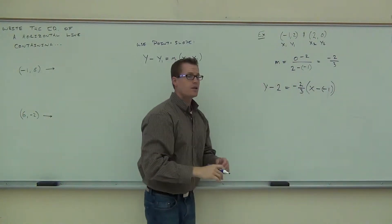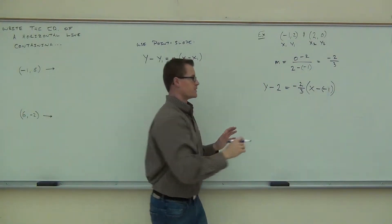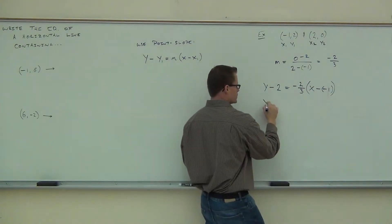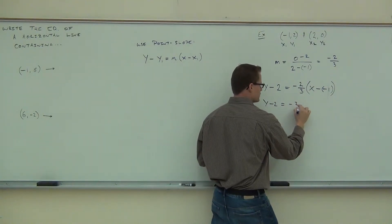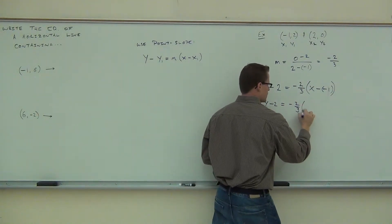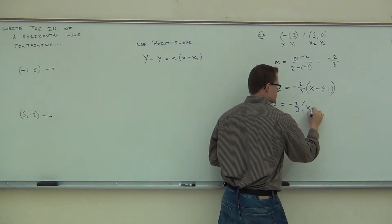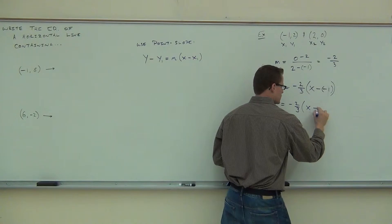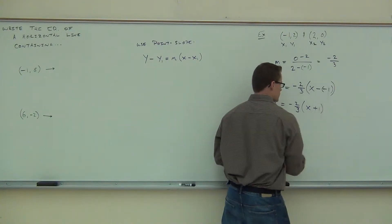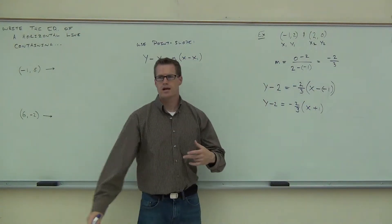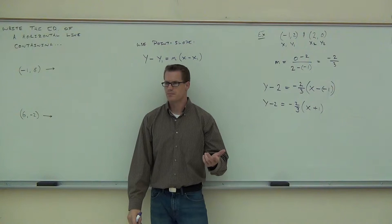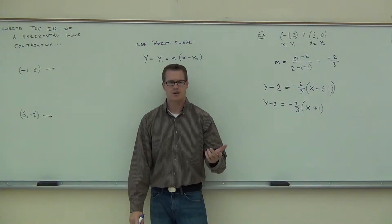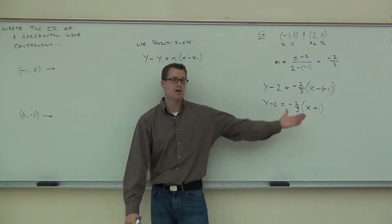Starting with x minus negative 1, let's do a little work on this. We have y minus 2 equals negative 2 thirds times x plus 1. This is great if you're asked to leave it in point-slope form — if your teacher asks for point-slope form, you're done.